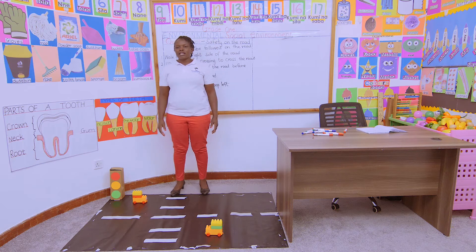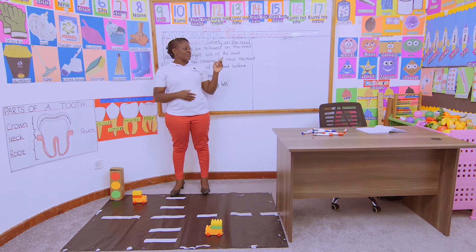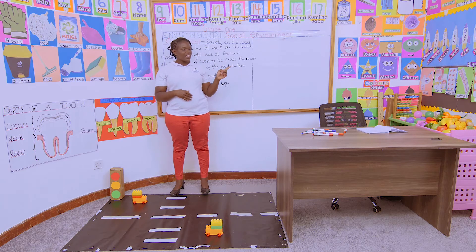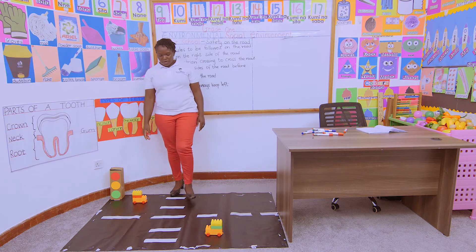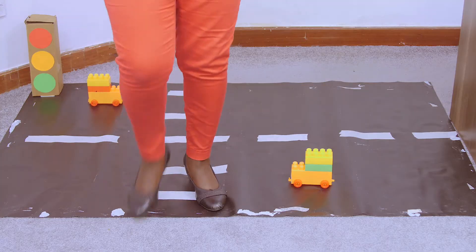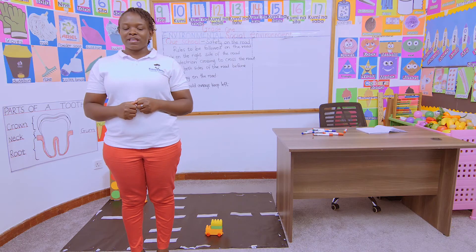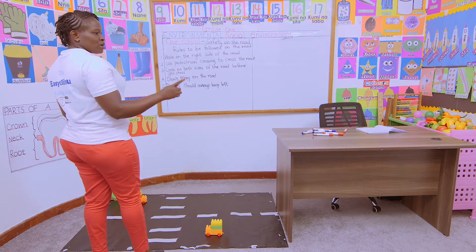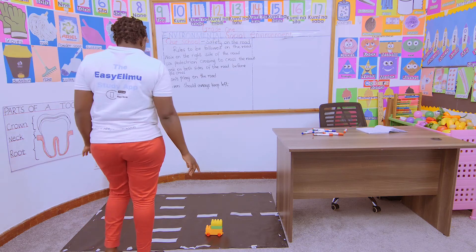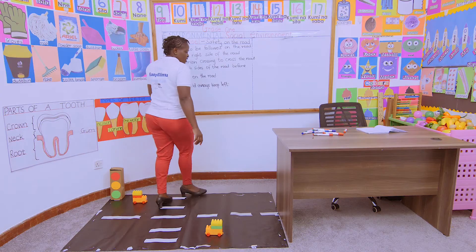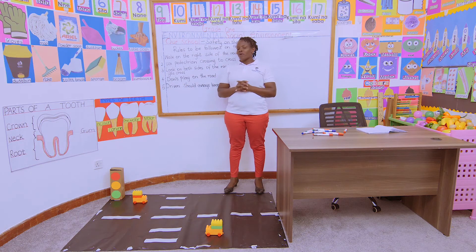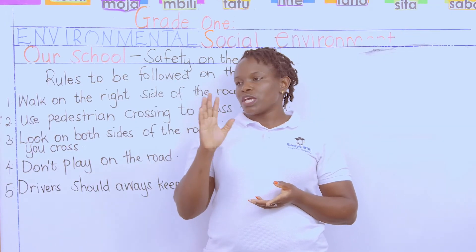What am I supposed to do? I will not just cross the road as I run. I will look left, look right, look left again, and if the road is clear, I will cross quickly but I will not run. Oscar, try it. We look left, we look right, we look left again — if the road is clear, you cross quickly but do not run.